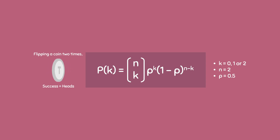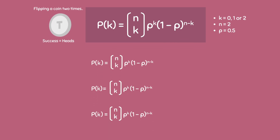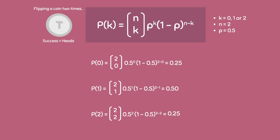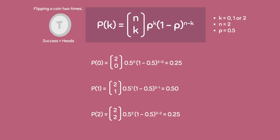Now that we have identified each variable, we will use the formula to determine the probability of each value of k. After plugging in the necessary values into the formula, you should get 0.25, 0.50, and 0.25 again as your final answers. These are the probabilities for each respective value of k.